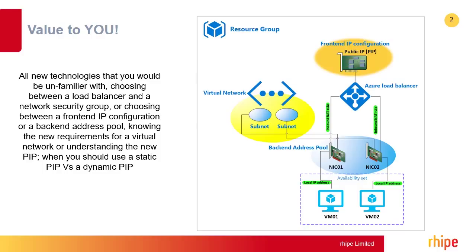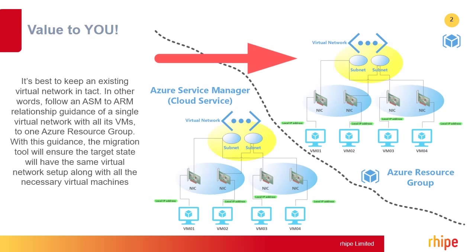Dealing with the new Azure resource management can also be a nightmare — all new technologies that you would be unfamiliar with. Choosing between a load balancer and a network security group, or choosing between a front-end IP configuration or a back-end address pool. Knowing the new requirements of a virtual network, or understanding the new PIP — when you should use a static PIP versus a dynamic PIP. Rule of thumb when working with this VM migration tool: it's best to keep an existing virtual network intact. In other words, follow an ASM to ARM relationship guidance of a single virtual network with all its VMs to one Azure resource group.